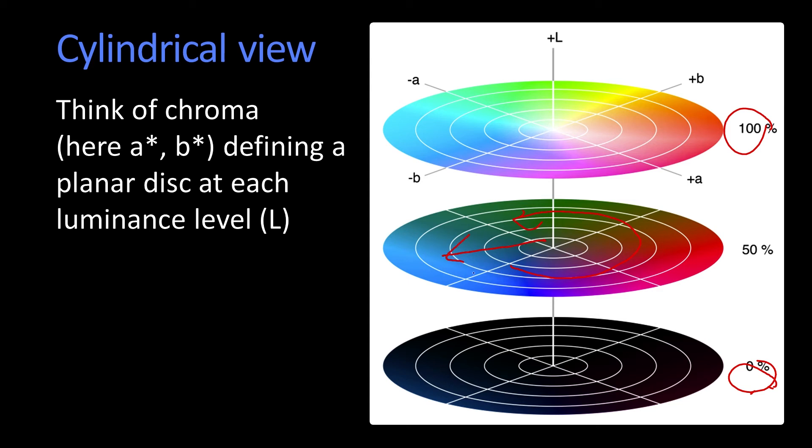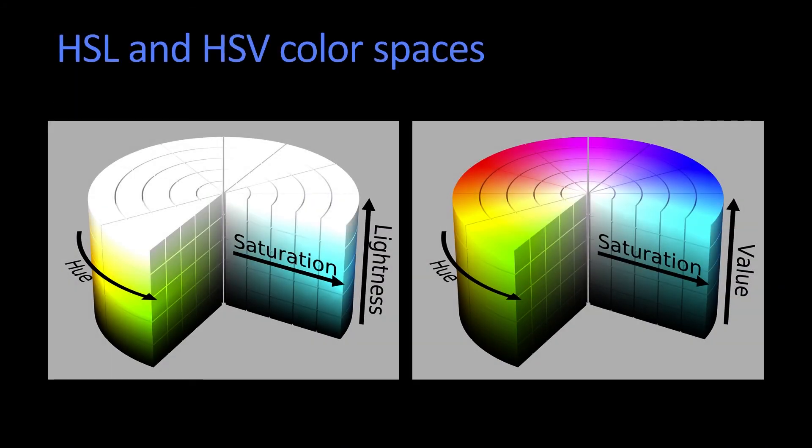And as you move outside, things become purer in color. So two systems that people use a lot to talk about these things are called sometimes hue, saturation, and lightness, or sometimes hue, saturation, and value. There are all different kinds of color spaces.